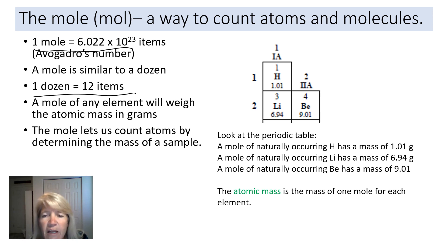this number right here, which is the atomic mass, is the grams of a mole. So a mole of naturally occurring hydrogen has 1.01 grams. A mole of naturally occurring lithium has 6.94 grams. And a mole of naturally occurring beryllium has 9.01 grams. So the atomic mass is the mass of one mole.